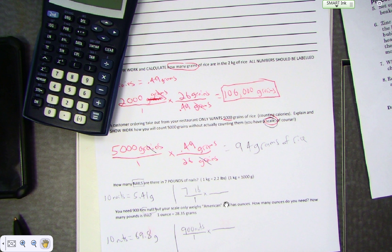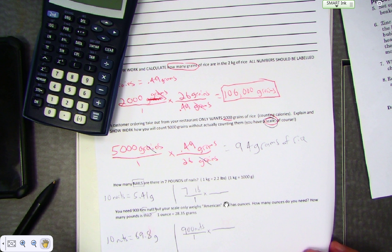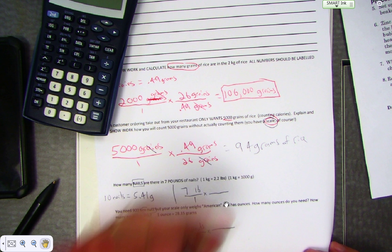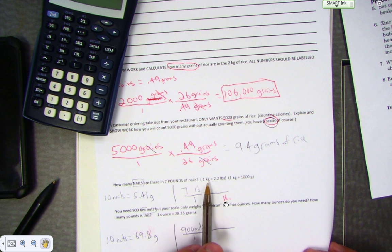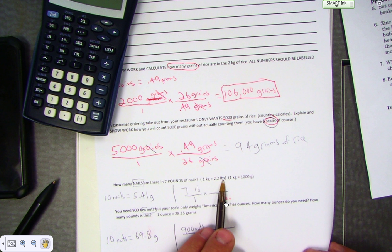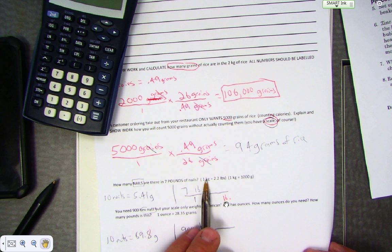Okay, so here we go. Let's see if you got this. How many nails are there in seven pounds of nails? A lot of numbers—I don't know what to do with them. That's okay. I know that if I have pounds here, I'm gonna put pounds on the bottom. Find some sort of information that you know about pounds. Here's one: 2.2 pounds is equal to one kilogram.